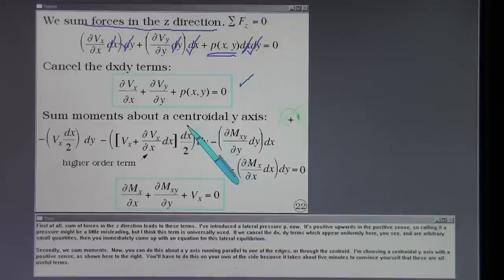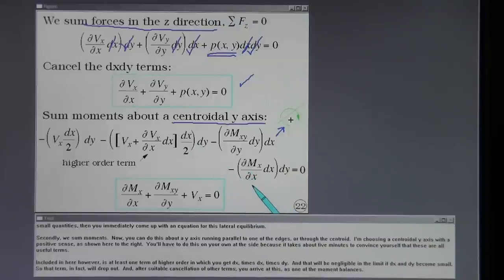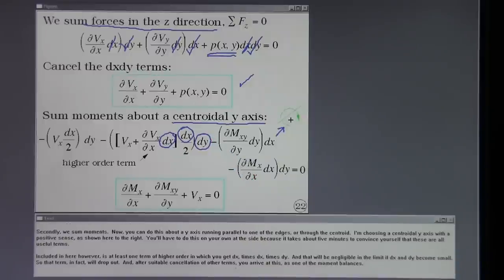Secondly, we sum moments. Now you can do this about a y-axis running parallel to one of the edges or through the centroid. I'm choosing a centroidal y-axis with a positive sense as shown here to the right. You'll have to do this on your own at the side because it takes about five minutes to convince yourself that these are all useful terms. Included in here, however, is at least one term of higher order in which you get dx times dx times dy. And that will be negligible in the limit if dx and dy become small. So that term, in fact, will drop out. And after suitable cancellation of other terms, you arrive at this as one of the moment balances.